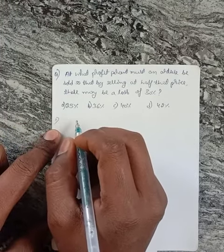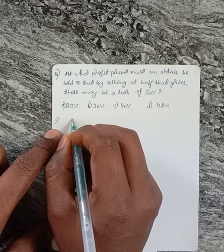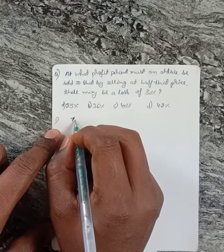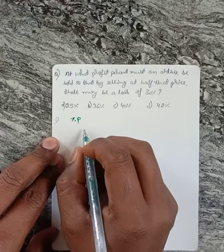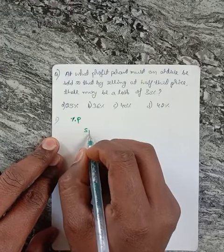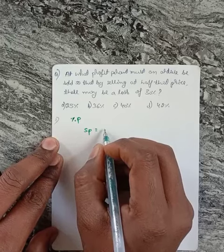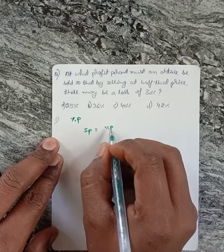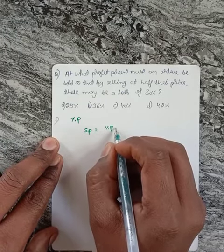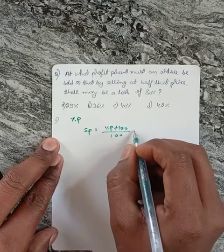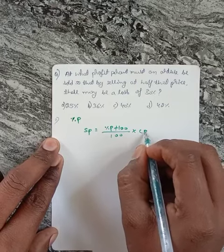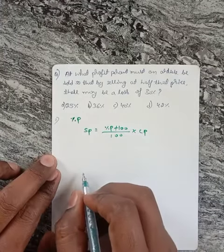That is P. Now, the given selling price equals profit percentage plus 100 divided by 100 times cost price. This is the formula.